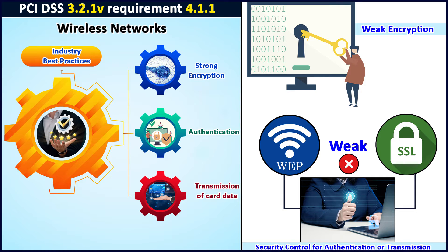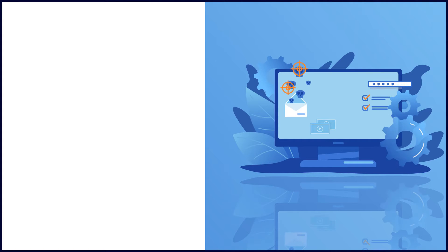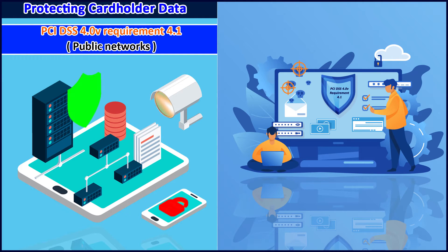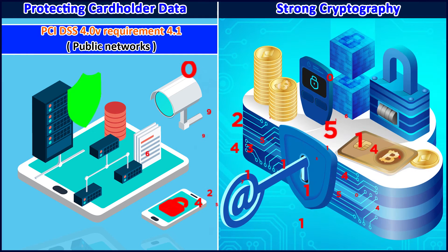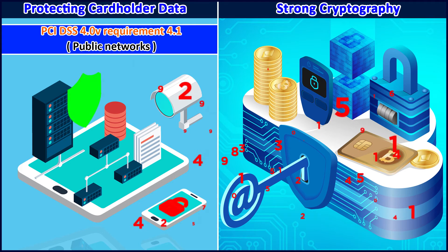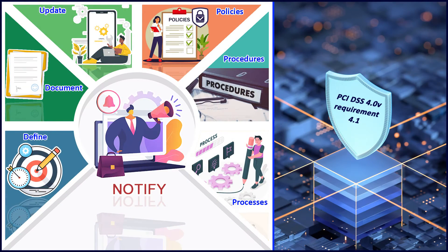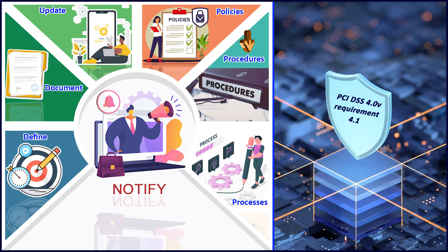PCI DSS version 4 requirement 4.1 also talks about processes and mechanisms for protecting cardholder data with strong cryptography during transmission over open public networks. It also specifies the need to define, document, update, and notify all affected parties about updates in the policies, procedures, and processes.